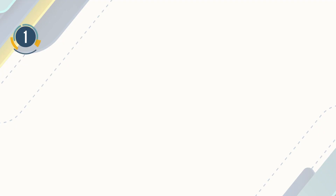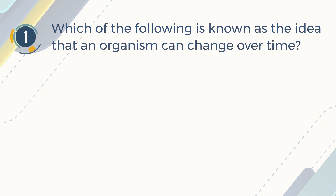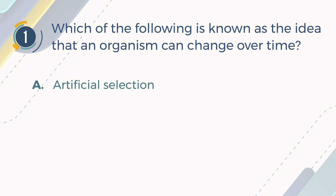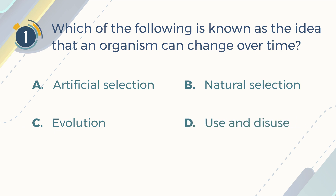Number 1. Which of the following is known as the idea that an organism can change over time? A. Artificial selection. B. Natural selection. C. Evolution. D. Use and disuse.